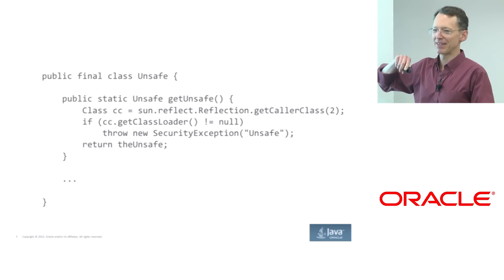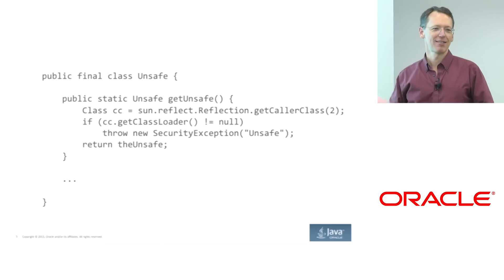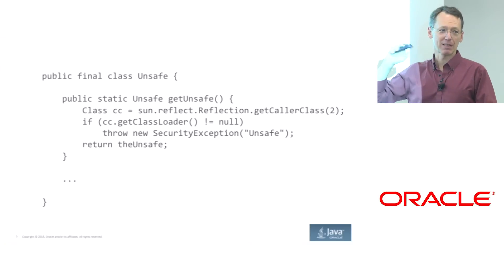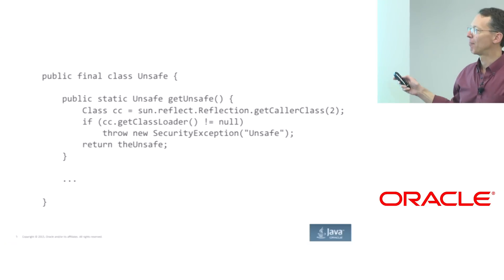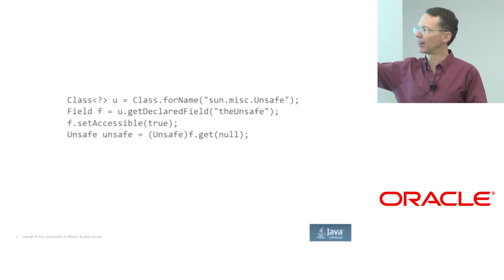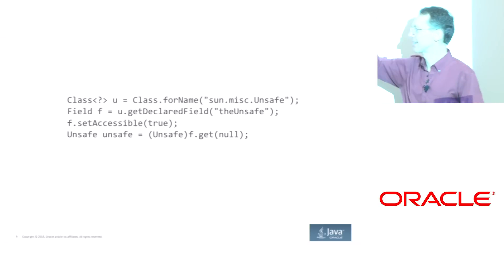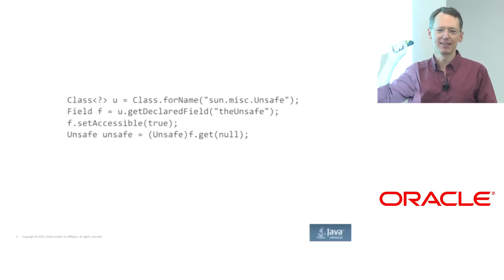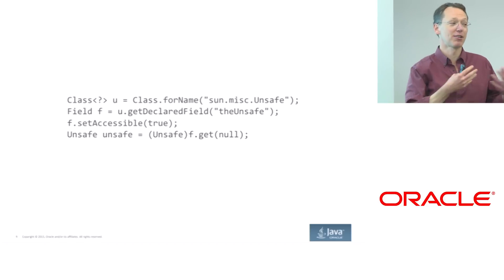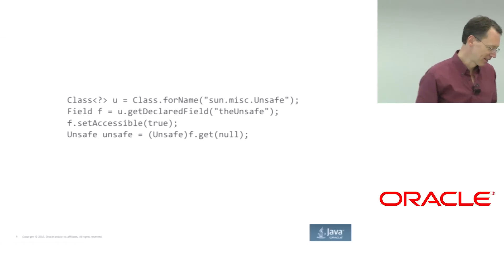You have to either put your code on the boot class path, or you have to do the following well-known hack — this is all over Stack Overflow. Class.forName("sun.misc.Unsafe"), get the declared field, make it accessible, and boom, you're off to the races — at the mere cost of this code plus a compiler warning, which you can also turn off if you really want to with -XDignore.symbol.file=true.